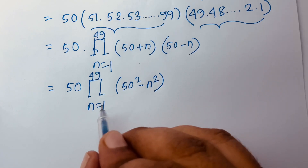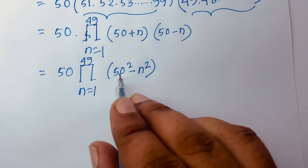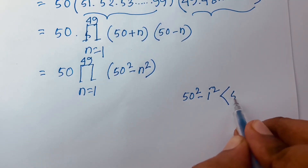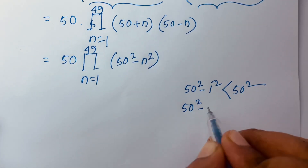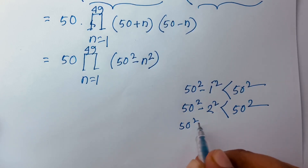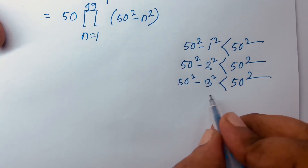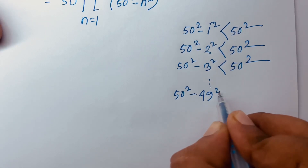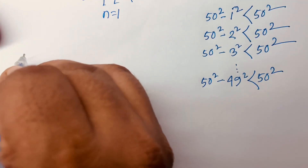For n equals 1, we get 50 squared minus 1 squared, which is less than 50 squared. For n equals 2, we get 50 squared minus 2 squared, also less than 50 squared. For n equals 3, 50 squared minus 3 squared is also less than 50 squared. And finally when n equals 49, 50 squared minus 49 squared is still less than 50 squared.